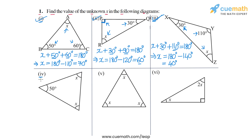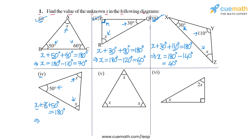In part 4 we have two unknown angles — both are x — and we have 50 degrees. The sum of these three angles should be 180 degrees. So x plus x plus 50 degrees should be equal to 180 degrees. From this we will get 2x on the left side, and we can take the 50 degrees to the right side.